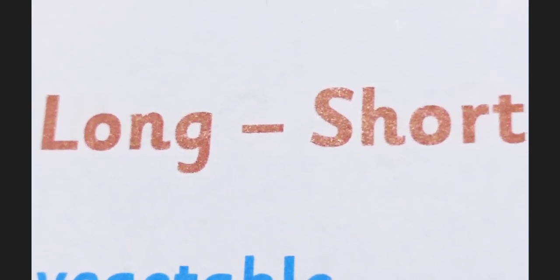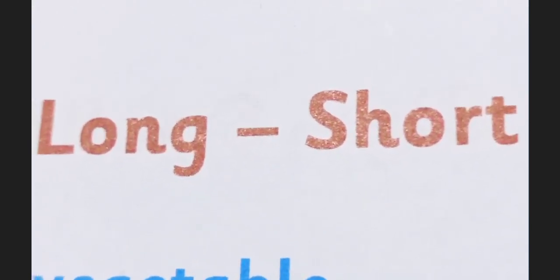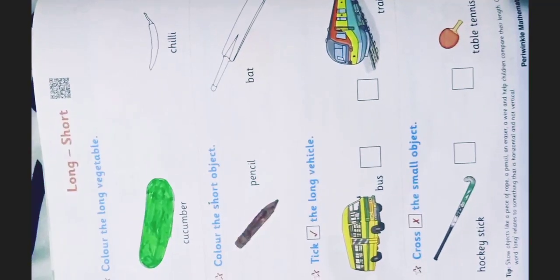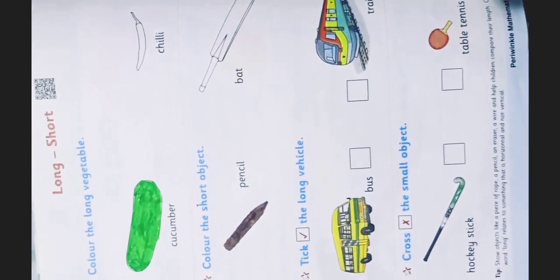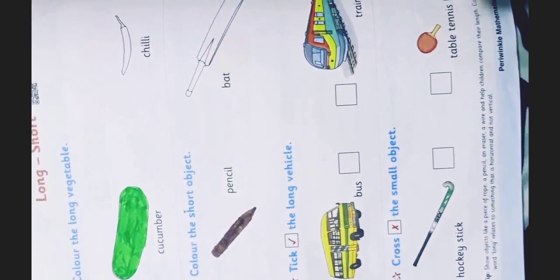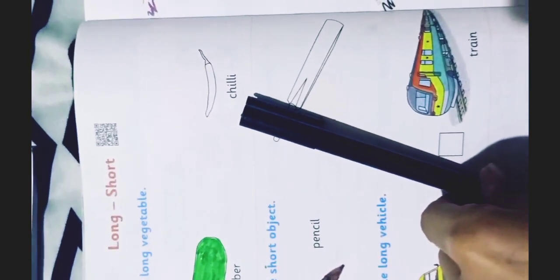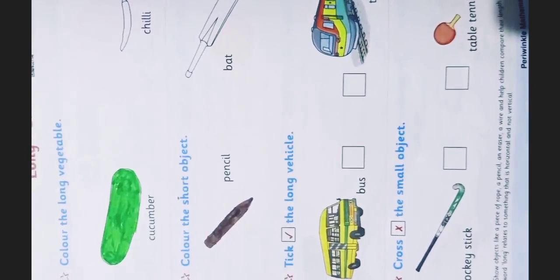It is such as big and small. Here we compare the length of the given objects. Do you find every object of the same length? No. We find some objects are long and some are short in length.